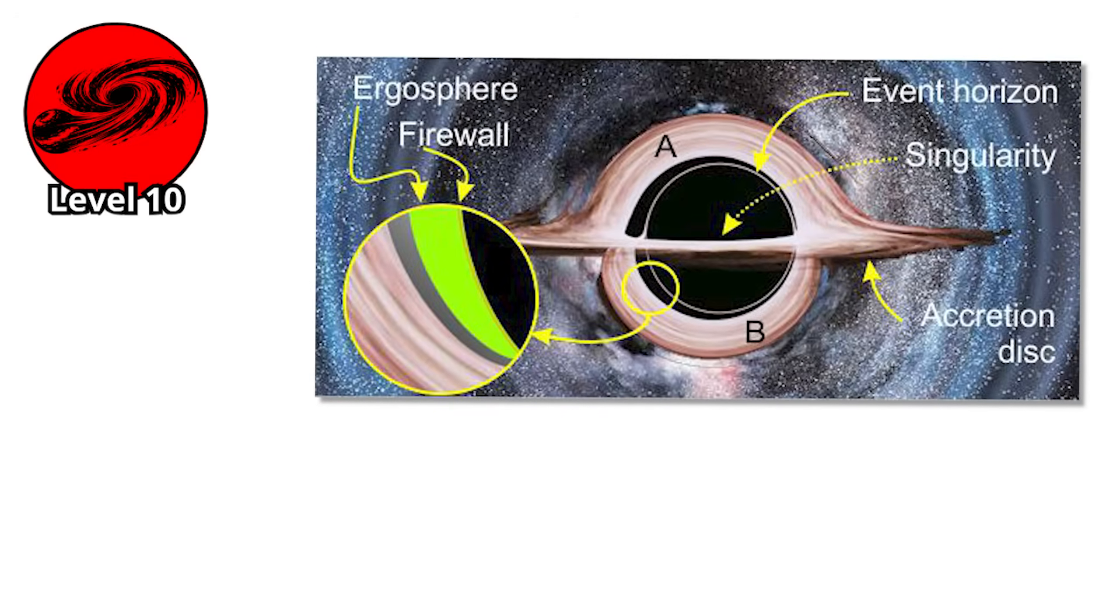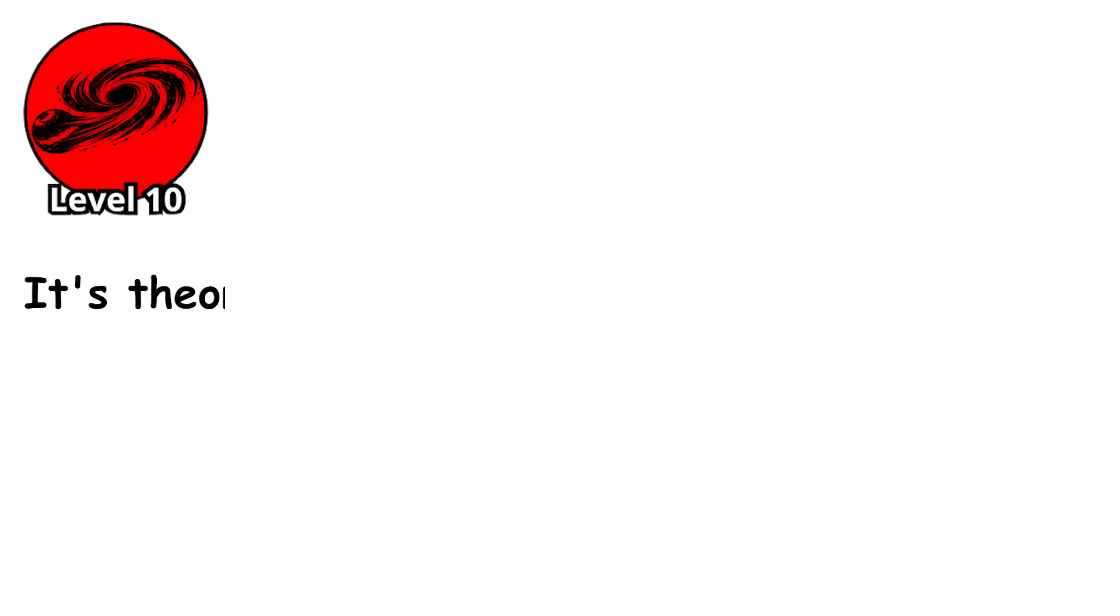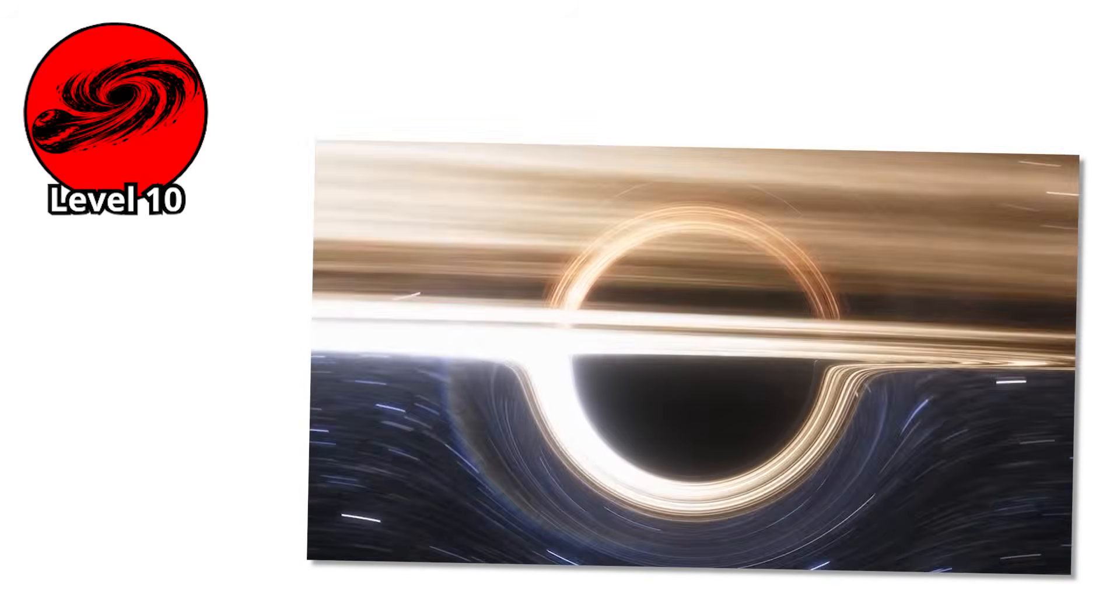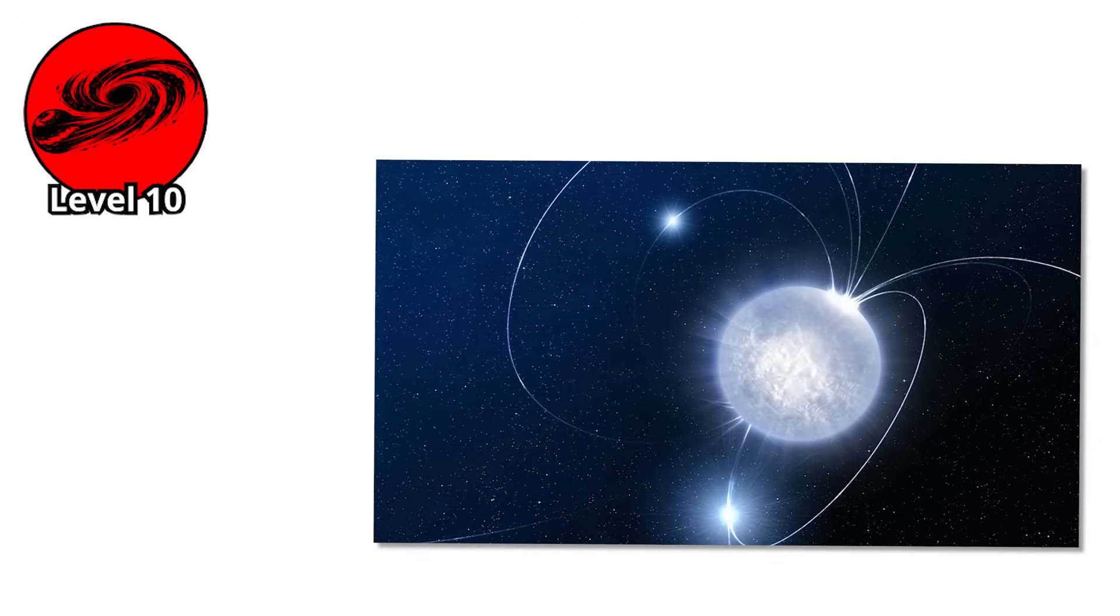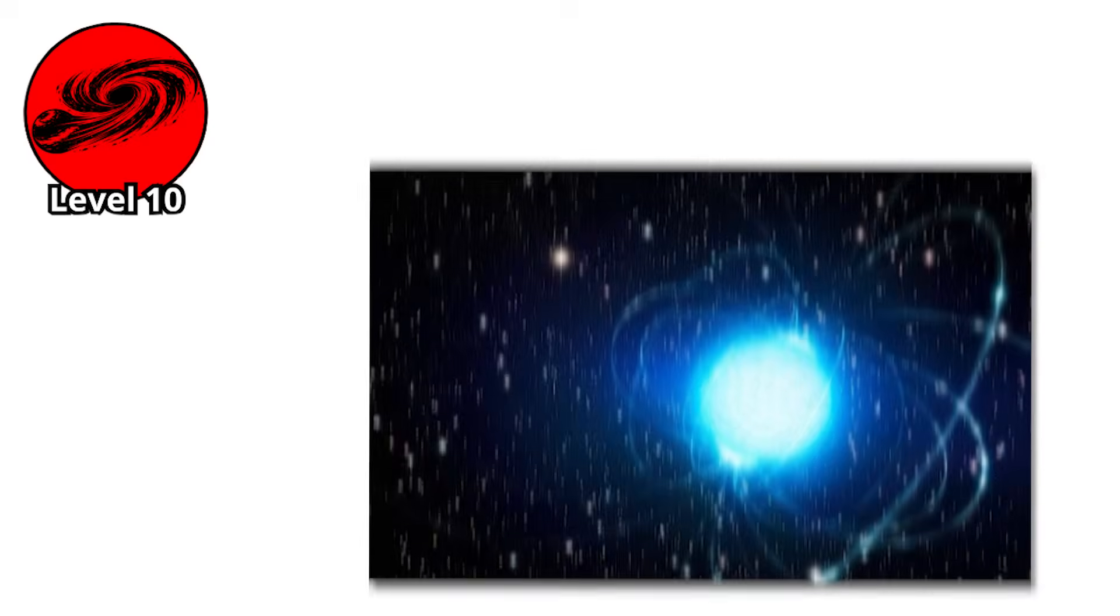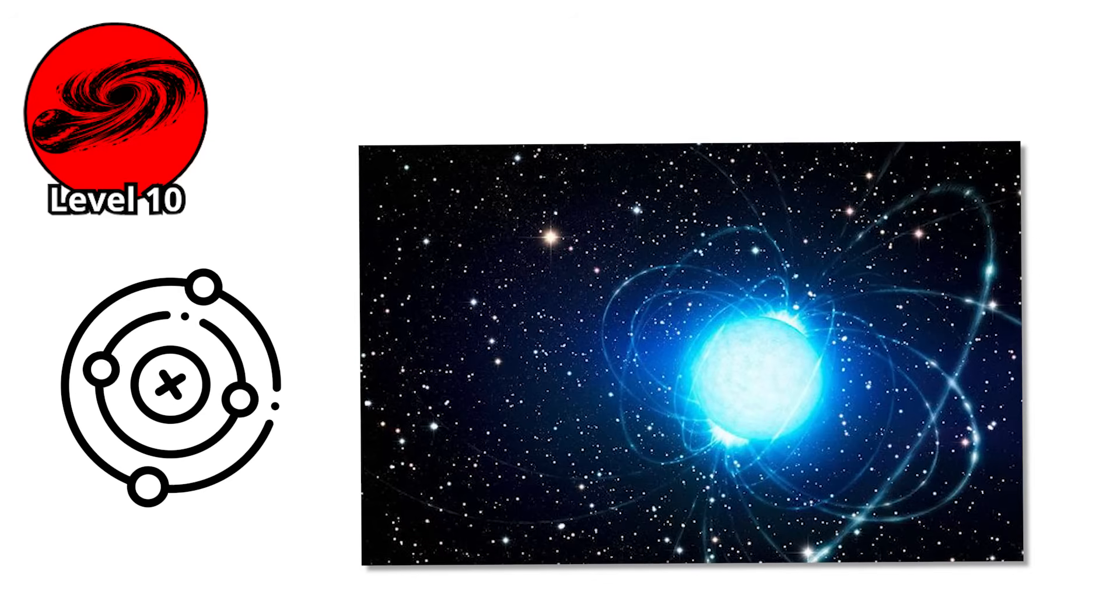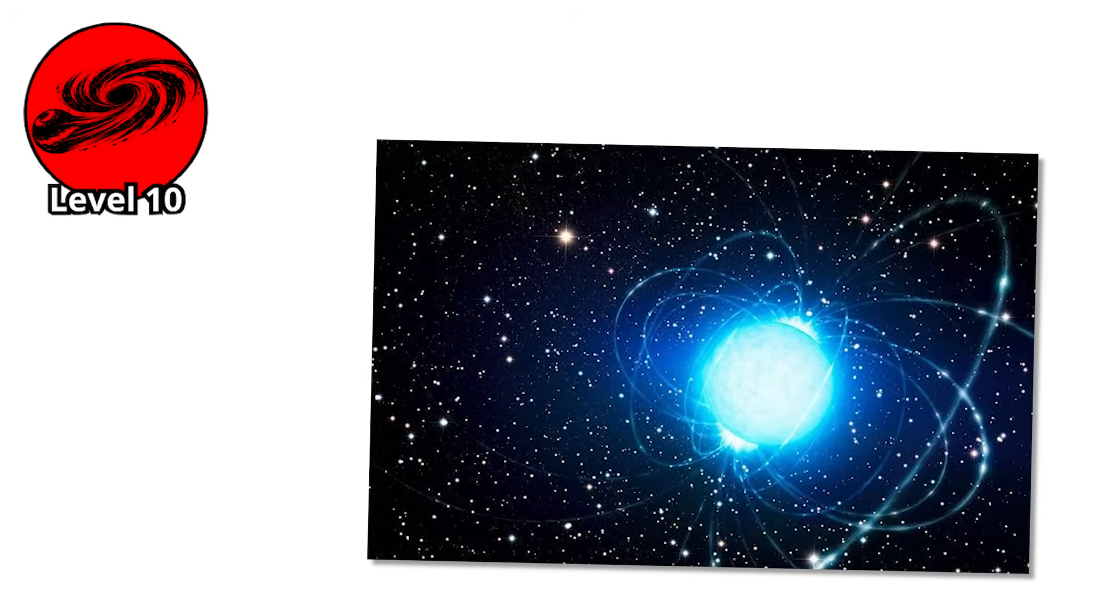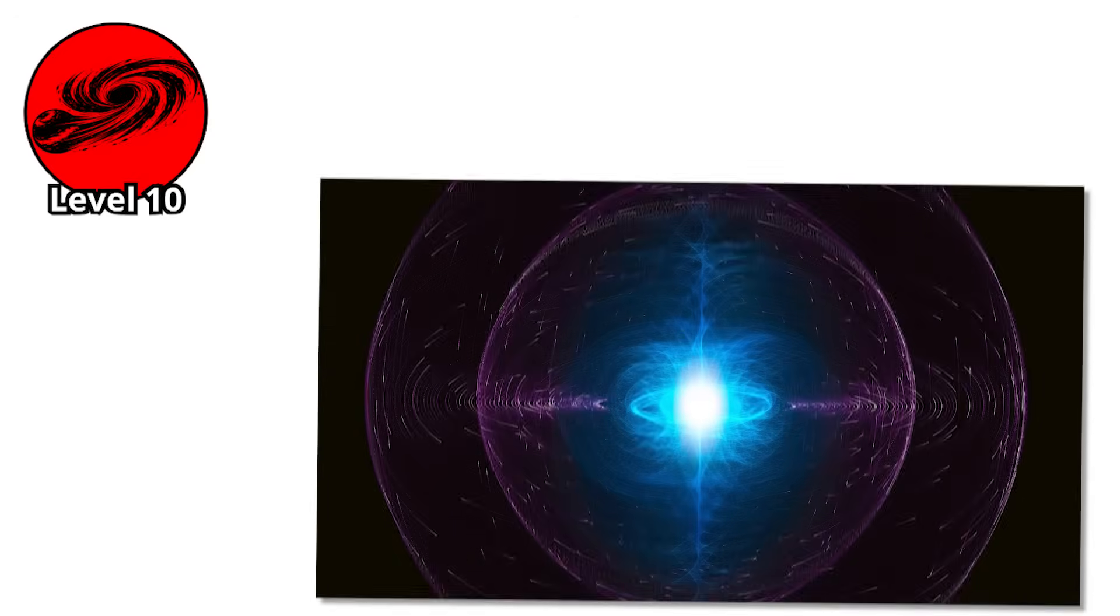In the ergosphere, the region just outside the event horizon of a rotating black hole, it's theoretically impossible to remain stationary. Spacetime itself is rotating, and anything in that region must rotate with it. Then there are hypothetical quark stars, objects even denser than neutron stars, where matter is compressed so intensely that protons and neutrons break down into their constituent quarks. The surface of a quark star might have weather consisting of nuclear reactions and quark-gluon plasma storms, matter in states that have only been glimpsed in particle accelerators.